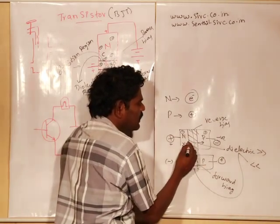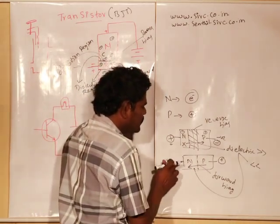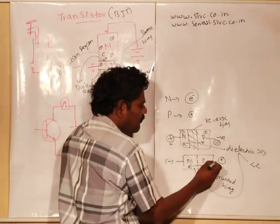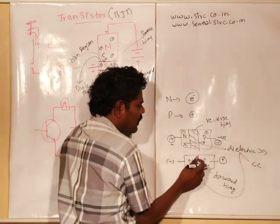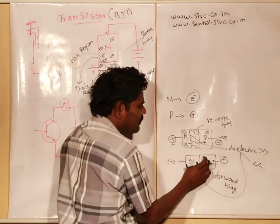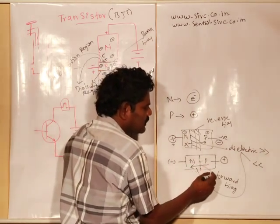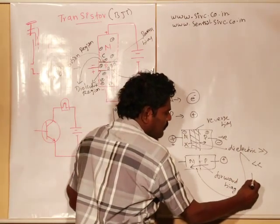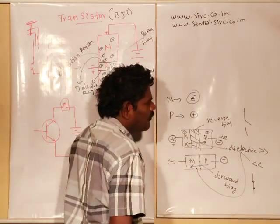When it is in reverse bias, it cannot conduct current. When I give the opposite poles — plus here and minus here — the depletion region is compressed, which makes some conduction. This reverse bias shrinks the depletion region and allows conduction. This we call forward bias. During forward bias, it will be switched on; during reverse bias, it will be switched off.